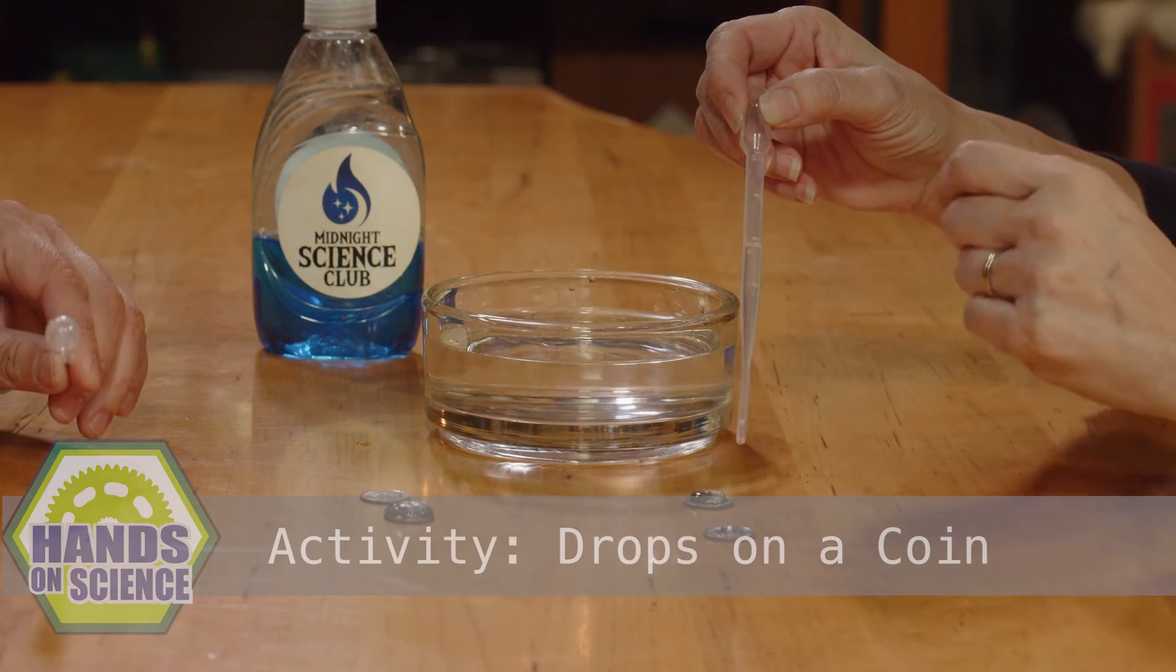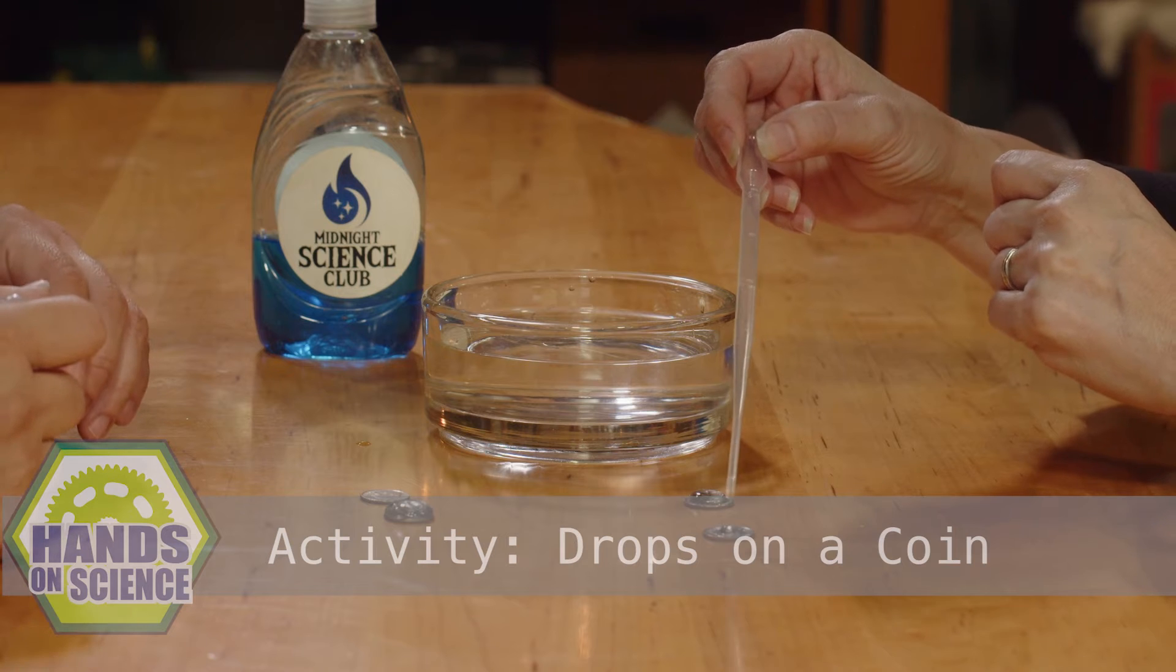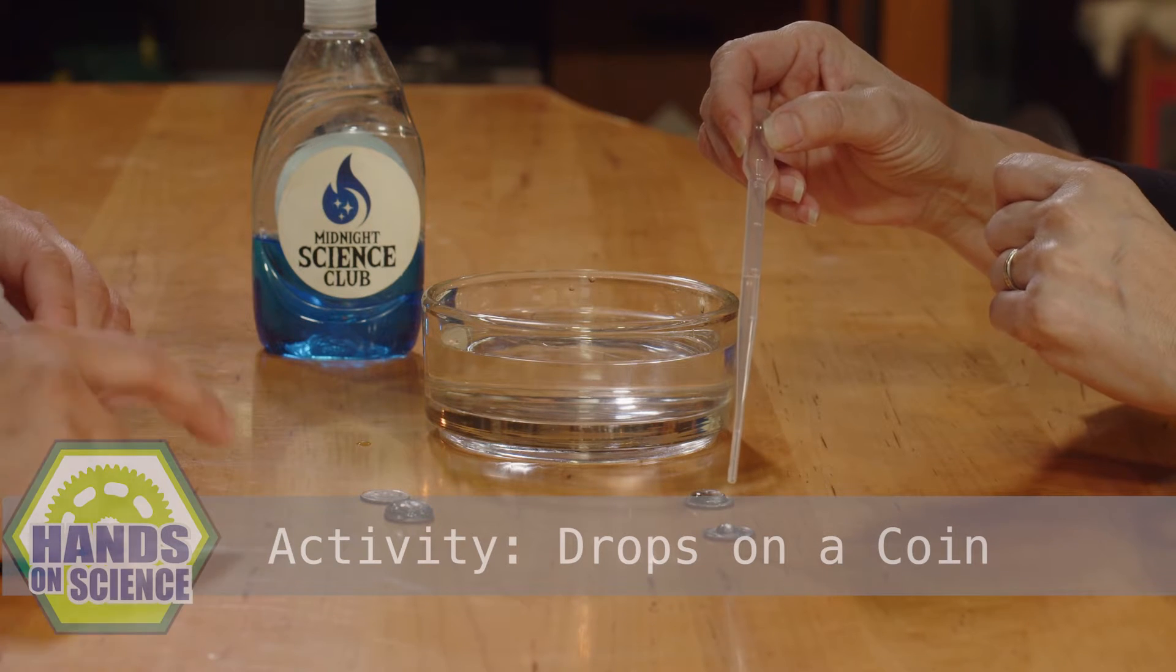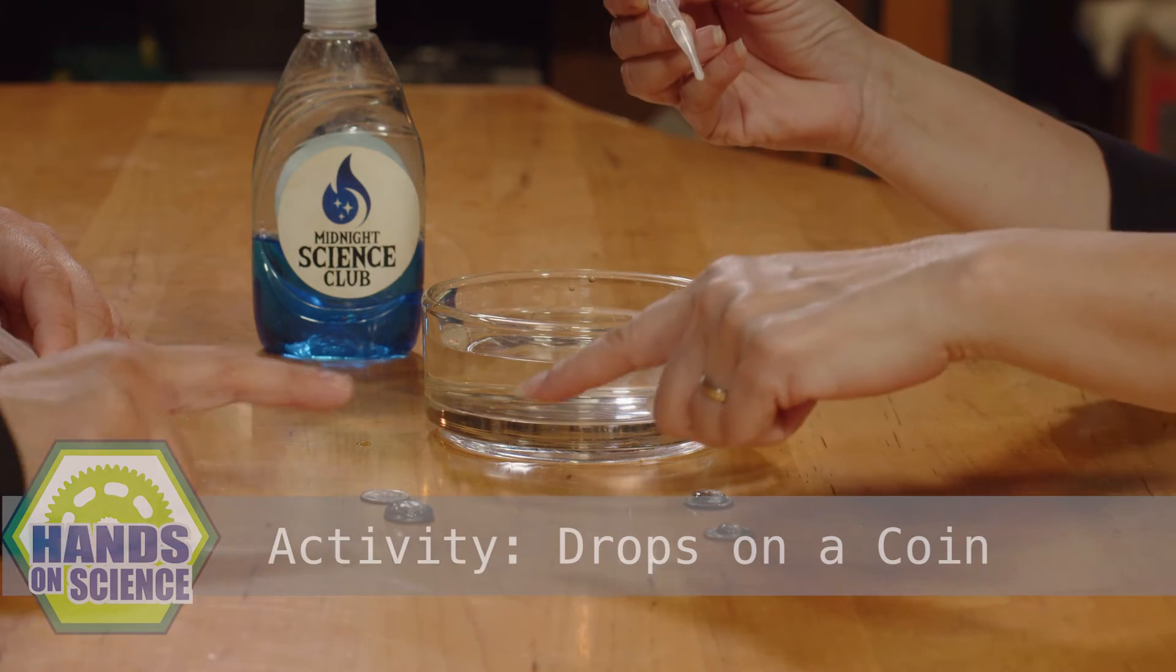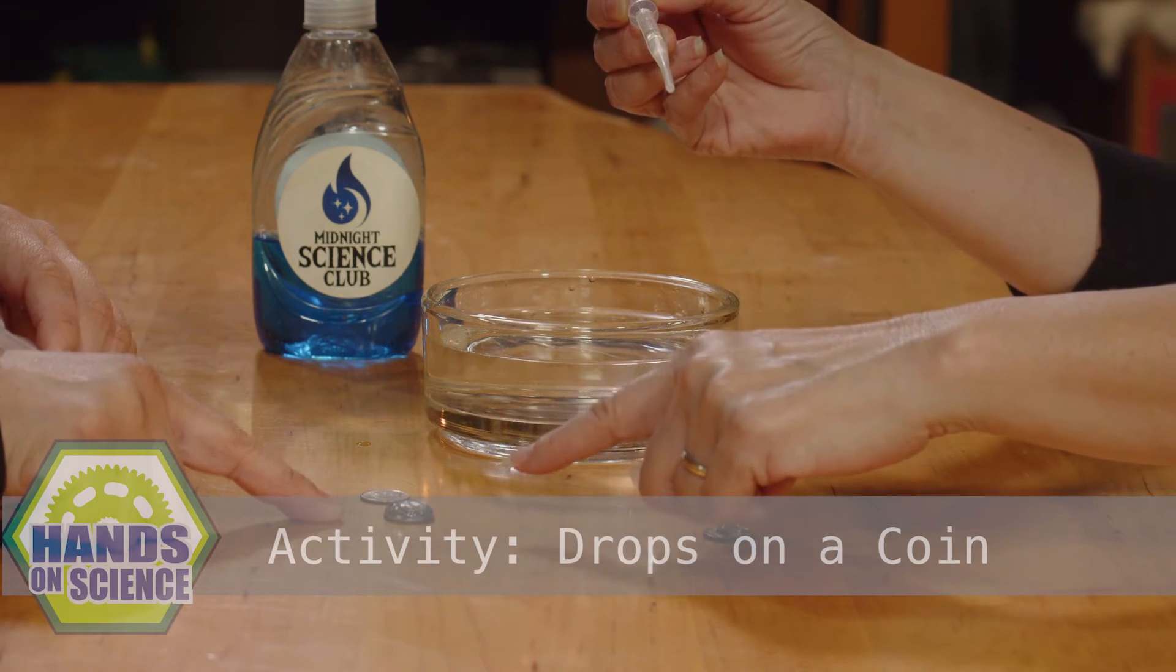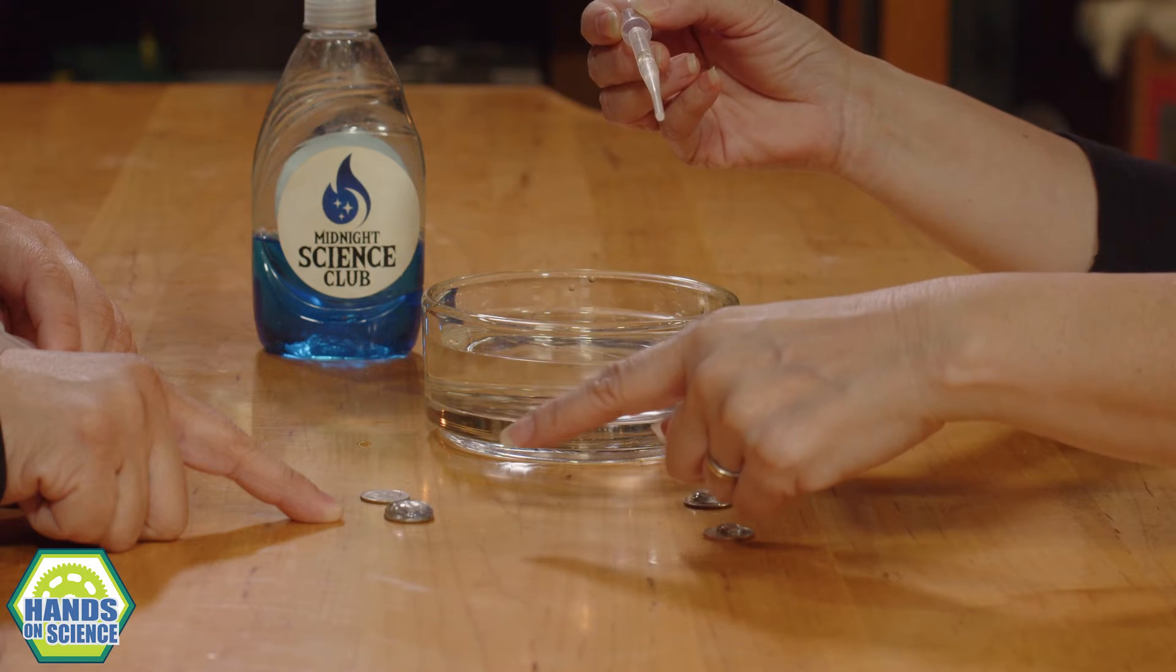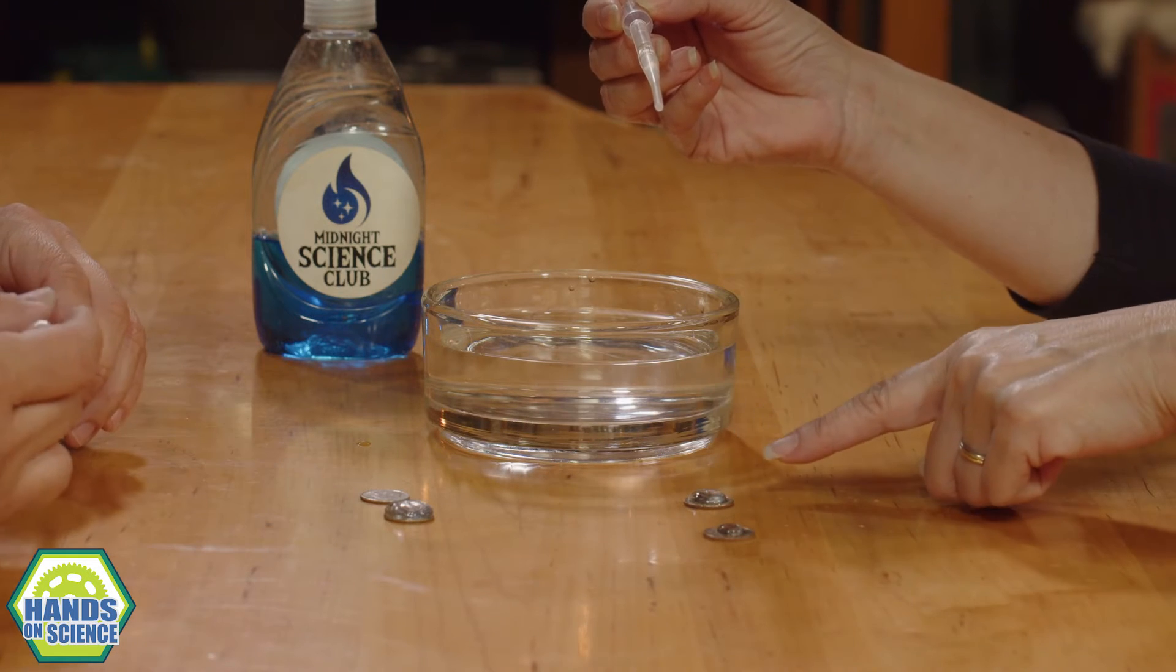And, you know, we need to see how many drops we can get without it spilling. So, this looks like a bigger bubble than that one. Yes, because that's a lot. How many drops is this? 20. Wow. That's a lot of drops of water. This was 10.